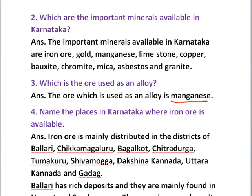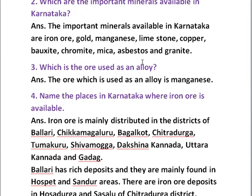Question three: Which ore is used as an alloy? Manganese ore is used in alloys for the preparation of stainless steel and to increase hardness. So manganese is the ore which is used as an alloy.